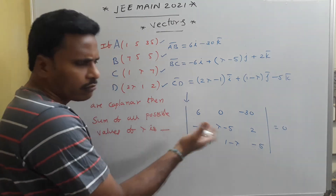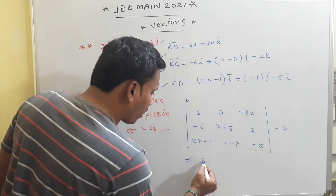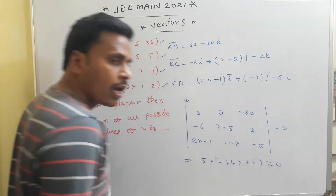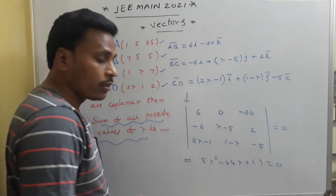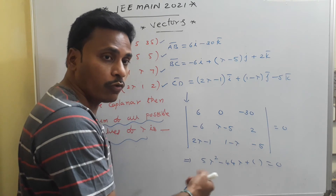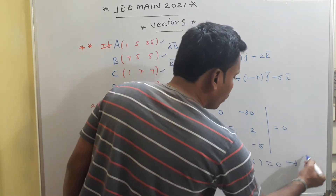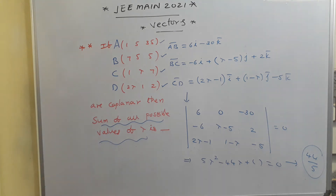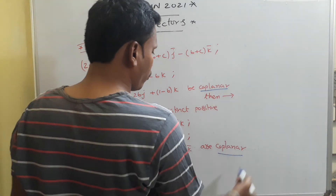Expanding the determinant using the usual matrix method gives a quadratic equation in λ of the form 5λ² − 44λ + (constant) = 0. Since the question asks for the sum of all possible values of λ, and it is a quadratic with two roots, the sum of roots equals −b/a = 44/5. So the answer for this problem is 44/5.